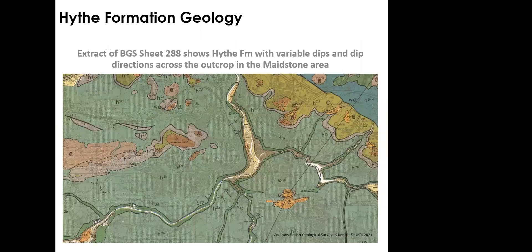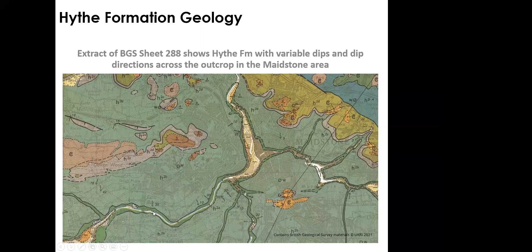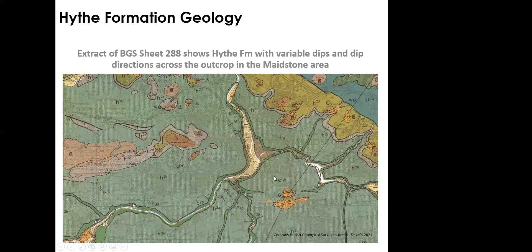Looking in plan at the dip data from the geology map, dips are quite variable locally. While the general rule is dipping north-northeast, you see locally 25 degrees into the Medway valley floor, 20 to 30 degrees to the north-northwest, dips to the southeast, and in the Loose valley dipping northwards at 40 degrees. Valley floors are clearly significant in affecting the structure of the deposit as a result of periglacial weathering and cambering effects.